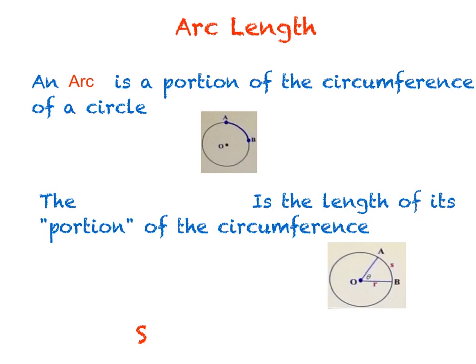Let me carefully draw the sketch. Notice this A to B that I've marked here in a different color — this represents the arc of a circle, a portion of the circumference. Circumference represents the entire distance around the outside.